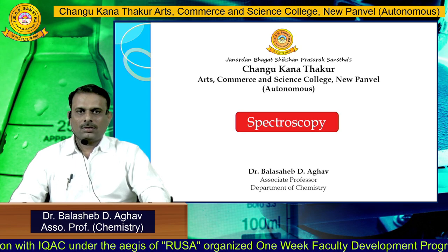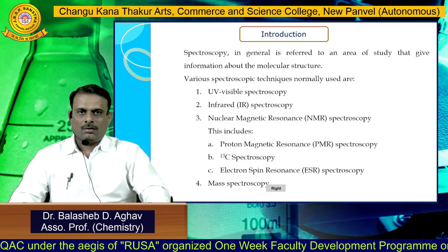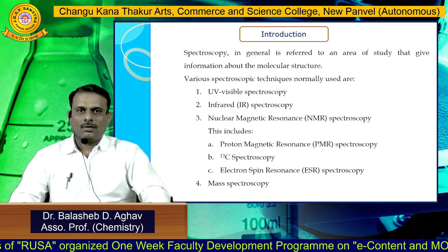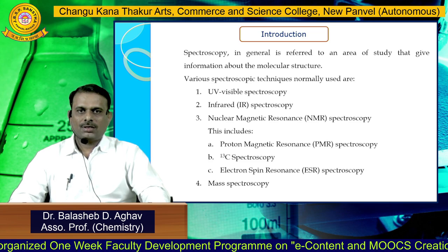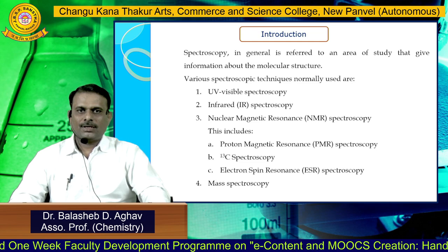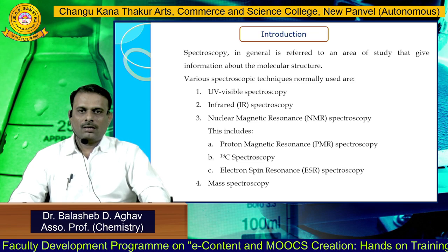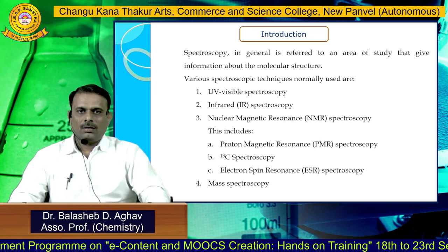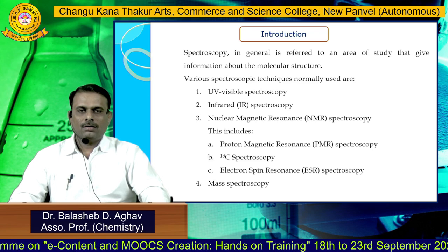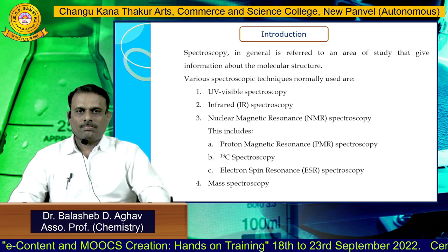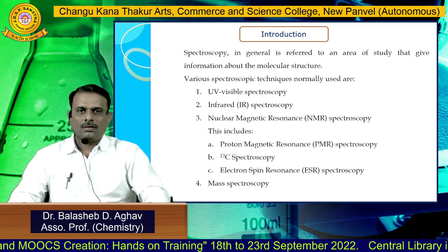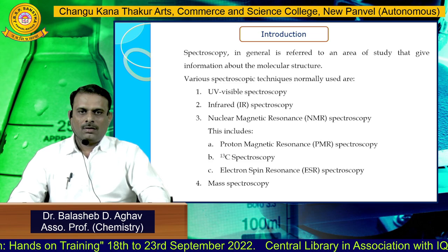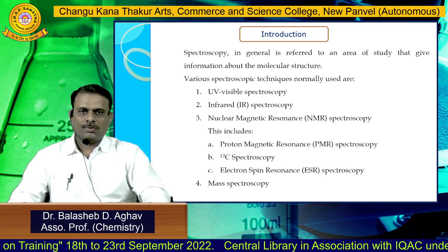Today we will see spectroscopy. Spectroscopy in general is referred to the area of study where we get information about the molecular structure. Various spectroscopic techniques normally used include ultraviolet visible spectroscopy, infrared spectroscopy, nuclear magnetic resonance spectroscopy — which is subdivided into proton magnetic resonance spectroscopy, C13 spectroscopy, and electron spin resonance spectroscopy — and mass spectroscopy.